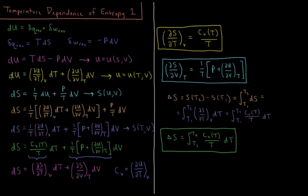Instead, let's say we try to express the change in internal energy as a function of temperature and volume. Then we'd have du equals the partial derivative of u with respect to T at constant volume times dT, plus the partial derivative of u with respect to V at constant temperature times dV — the standard total differential formula for a multivariable function from calculus 3.